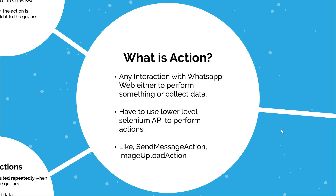So what is Action? Action is any interaction with WhatsApp web to either perform something on the UI or to collect data from it. In Action, you have to use the lower level Selenium API to perform actions. Some examples of Action can be Send Message Action or Image Upload Action. Send Message Action will send a message to a group and Image Upload Action will upload an image to the group.